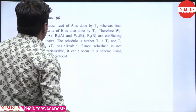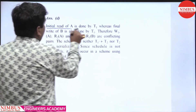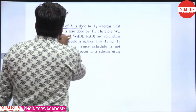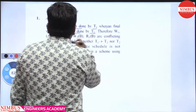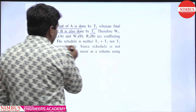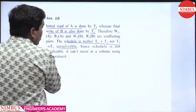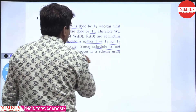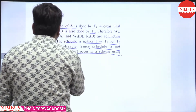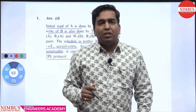Option D is the answer. The initial read on A is done by T1, and the final write on B is also done by T1. These are the conflict pairs — neither conflict serializable nor view serializable. So this schedule is not serializable and cannot occur under the 2PL protocol.